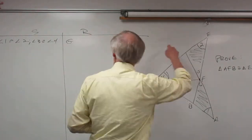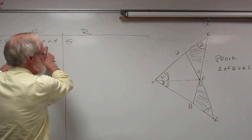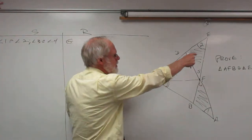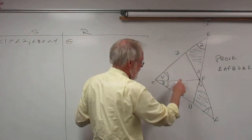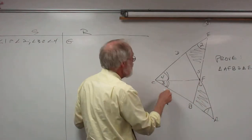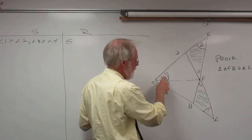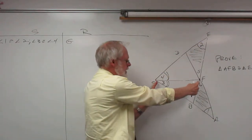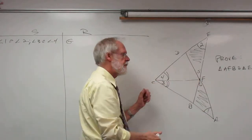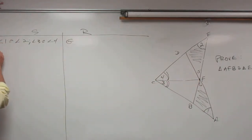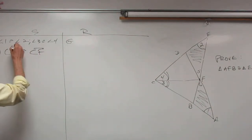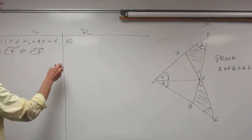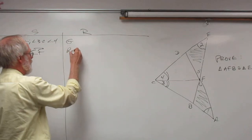Looking at this big triangle and this big triangle, we have an angle and an angle, and we have CF congruent to itself. Step two: CF is congruent to CF, and the reason is the reflexive property.